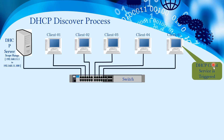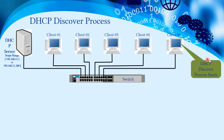Every computer runs a DHCP client service, whether it's a desktop, end-user computer, or server operating system. If the network configuration is set to obtain an IP address automatically, the network connection service triggers the DHCP client service. It is the responsibility of the DHCP client service to find the DHCP server in the network and get the IP address from it. To find the DHCP server, the DHCP client service initiates the DHCP Discover process.